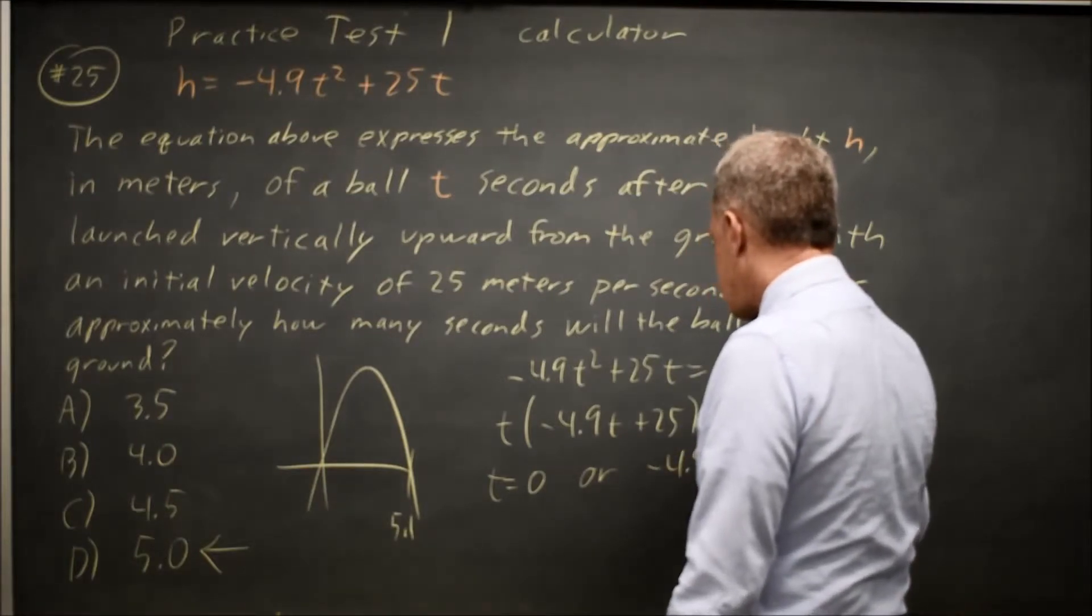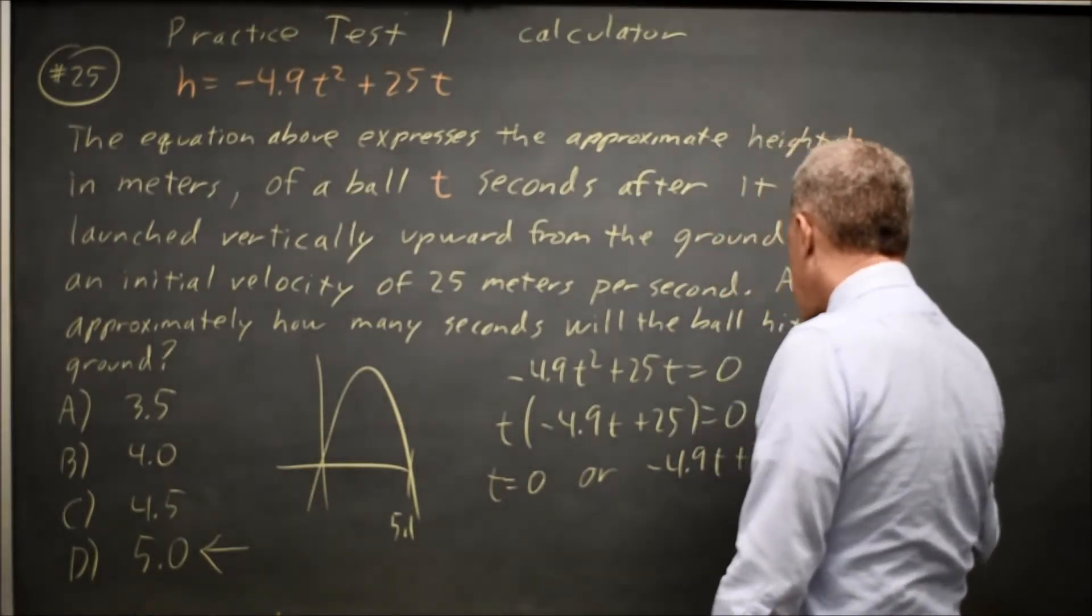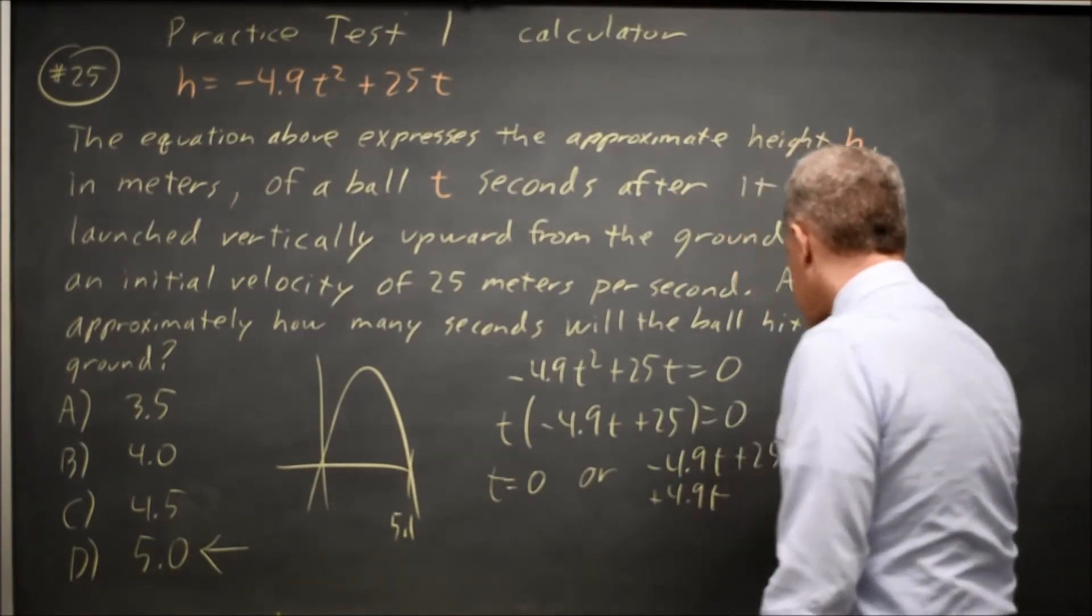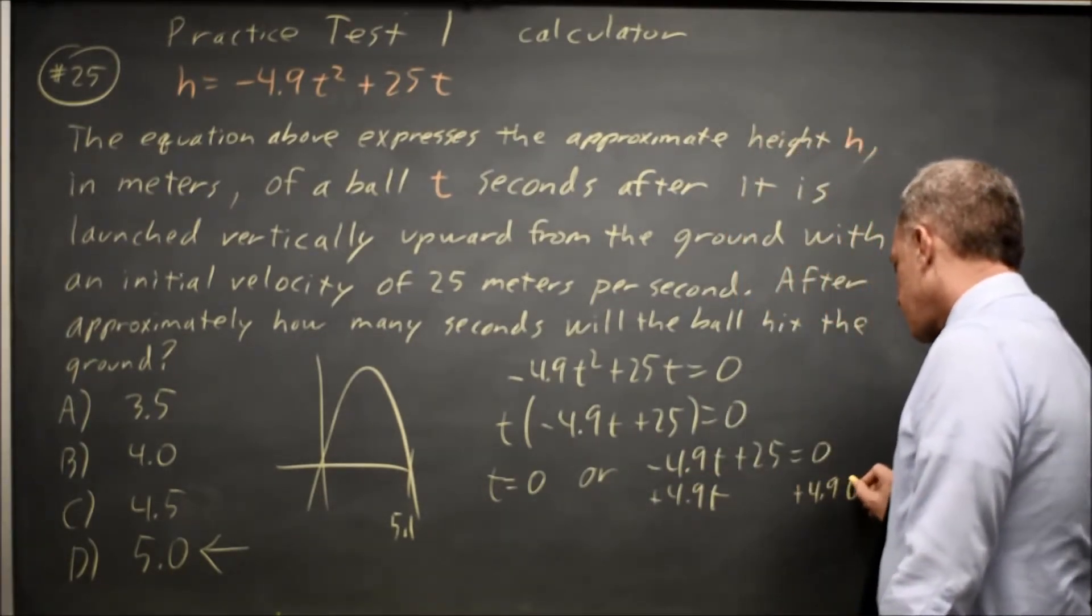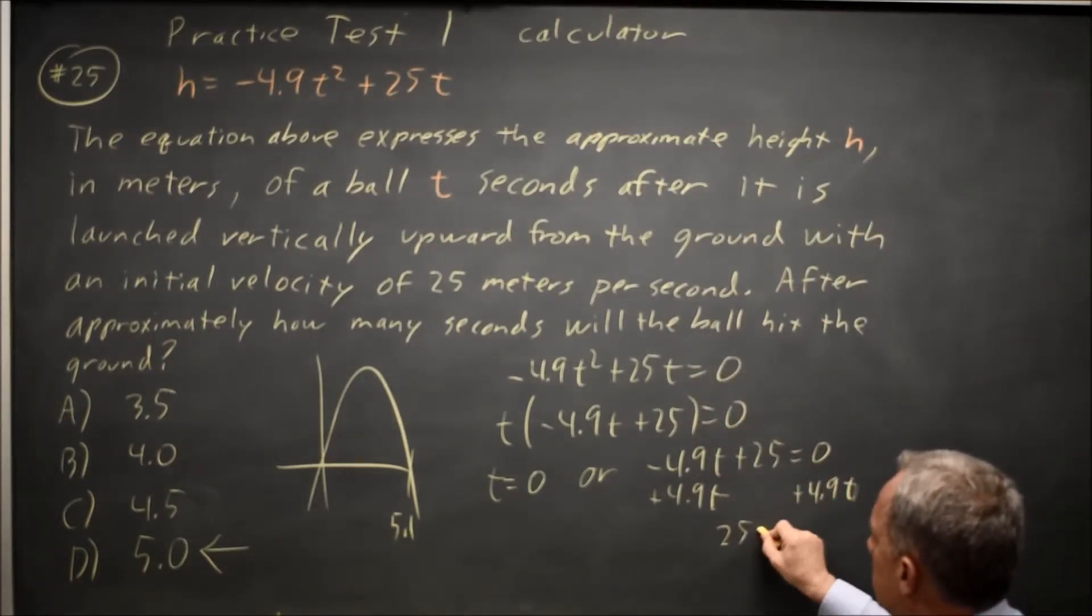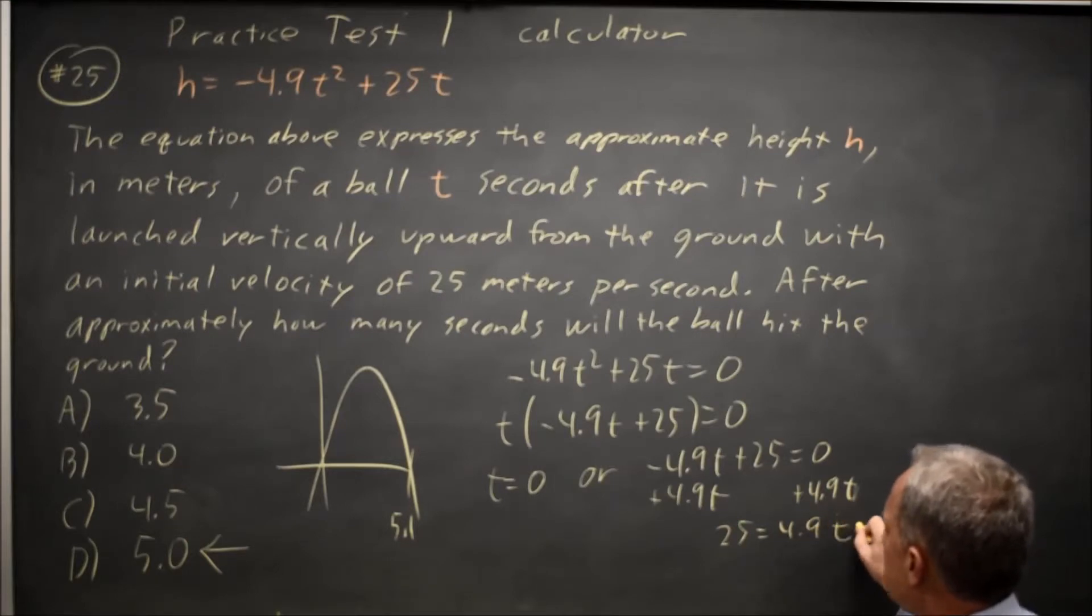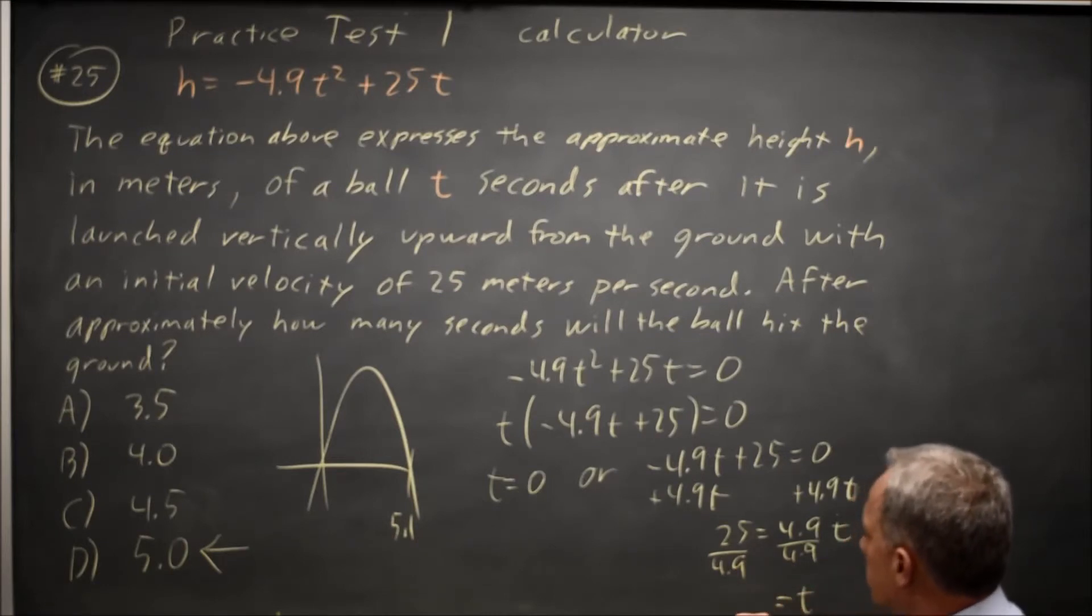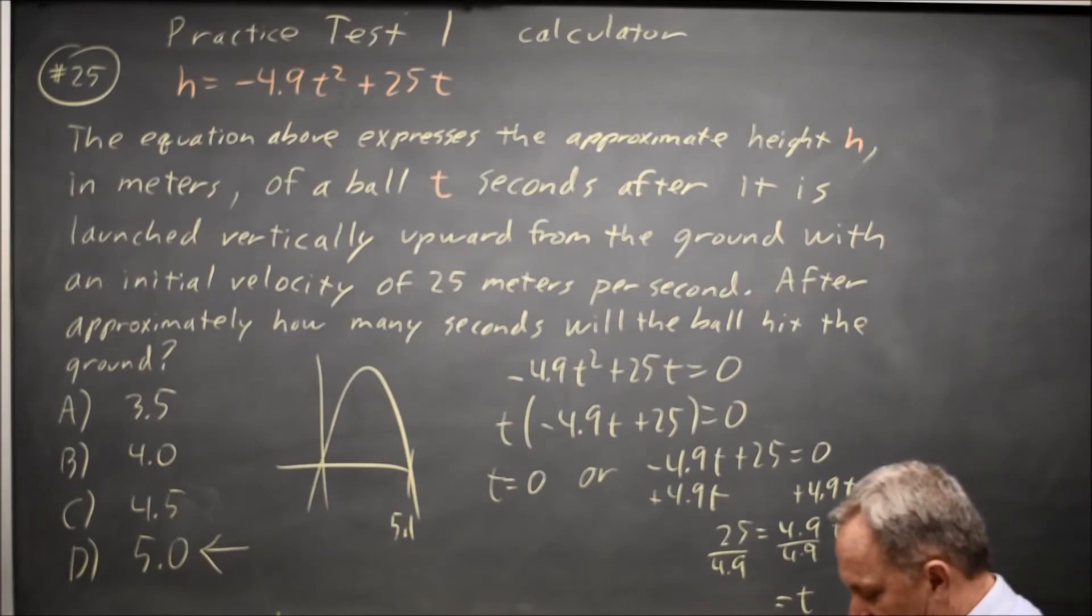negative 4.9 t plus 25 equals 0. So add 4.9 t to both sides, and I get 25 equals 4.9 t divided by 4.9, and t equals 25 over 4.9, which is about 25 over 5, which would be 5.